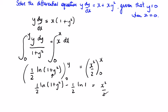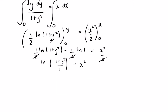I can cancel out my 2s or multiply by 2, so we're going to get the natural log of 1 plus y squared over 1 equals x squared.